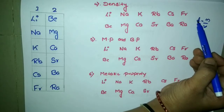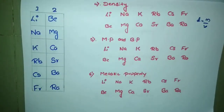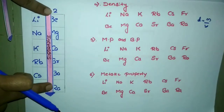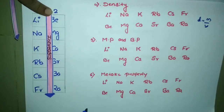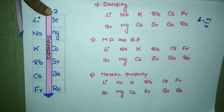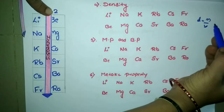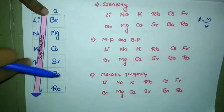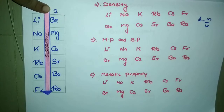As mass increases, density also increases; if volume increases, density decreases. As we go down the group, there is an increase in density — except for one or two cases. Why? As we go down the group, the atomic number increases, the number of electrons increases, and the protons and neutrons increase as well — so the atomic mass increases. Since density is directly proportional to mass, density increases. This holds for both group 1 and group 2.